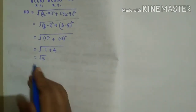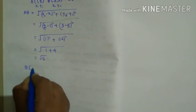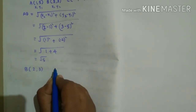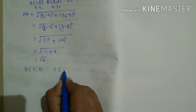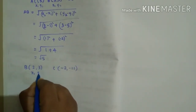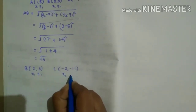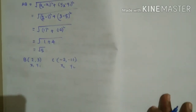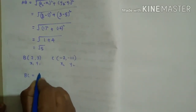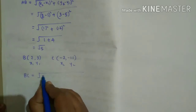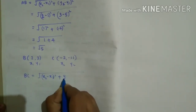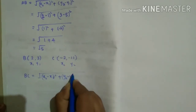Now I'll find BC. Take B as (2,3) as the first point (x1, y1) and C as (-2,-11) as (x2, y2). The formula is: BC = square root of (x2 - x1)² + (y2 - y1)².